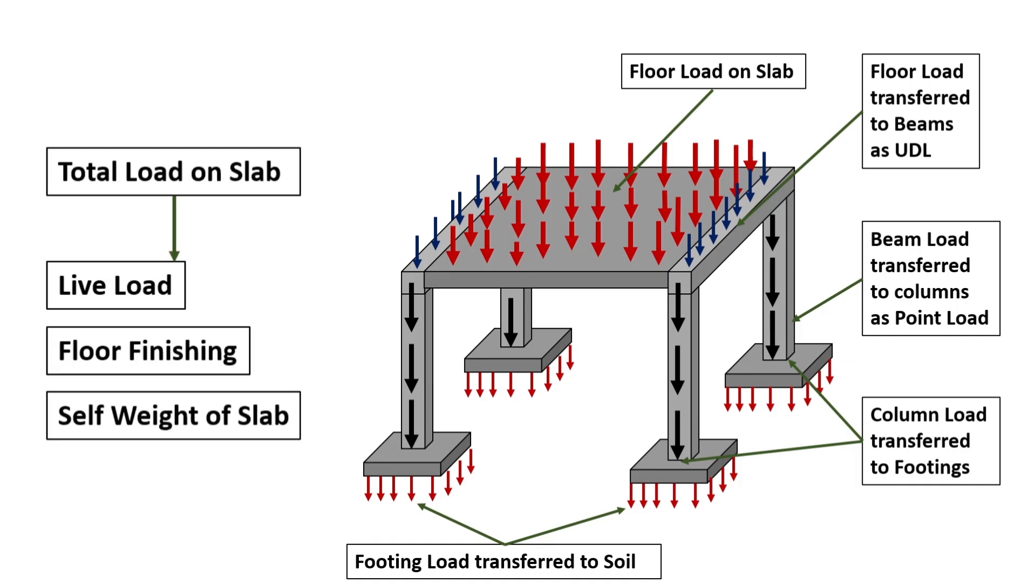The total load of a slab includes live load, floor finishing load and the self weight of the slab. This load is transferred to the beams which provide support to the slab and from the beams the load is transferred to the supporting columns, then from columns to the footings and finally to the soil on which the whole structure is to be constructed.